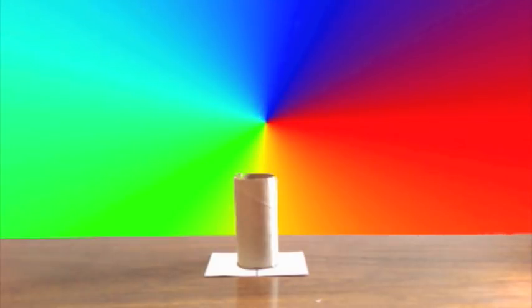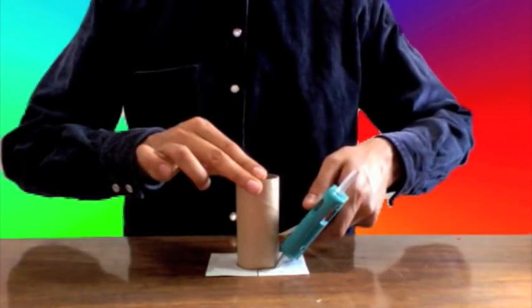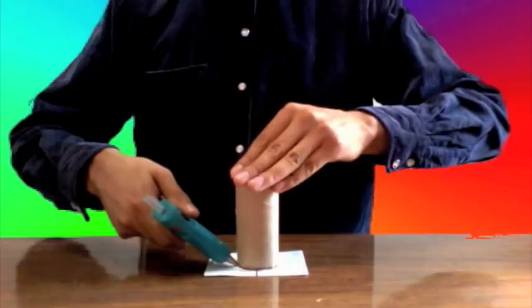Place two index cards over one side of the tube, creating a vertical slit and use hot glue to stick it in place.